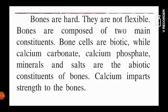These bones are hard and not flexible. You can observe your own bones by touching your fingers, ribcage, or head — they are hard, not soft or flexible. Bones are composed of two main constituents: bone cells are the biotic constituents, while calcium carbonate, calcium phosphate, minerals, and salts are the abiotic constituents. Calcium gives strength to the bones, as we have already studied.